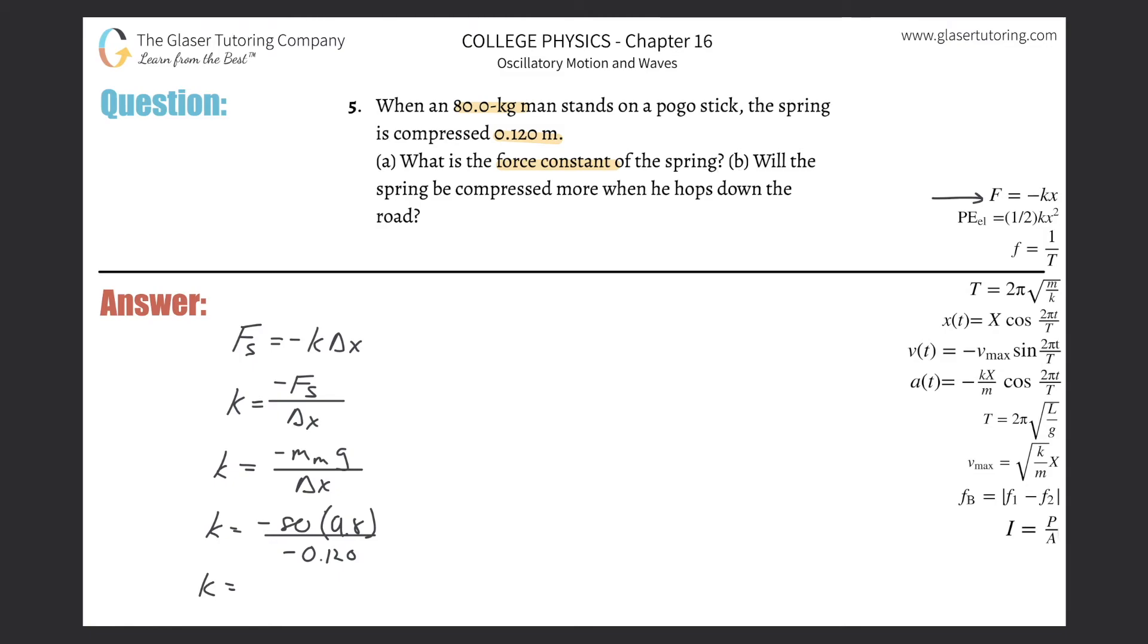And then we simply get a value of 6.53 times 10 to the third, and that is in newtons per meter. And that takes care of letter a.